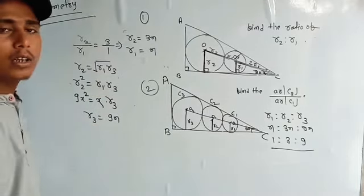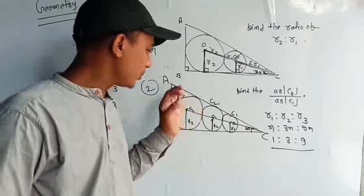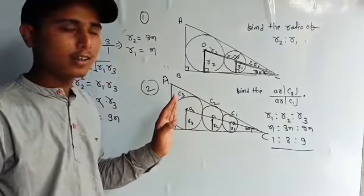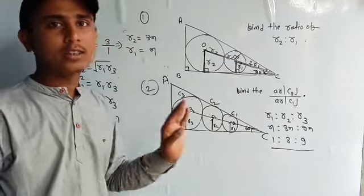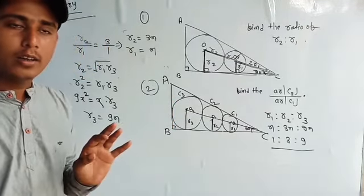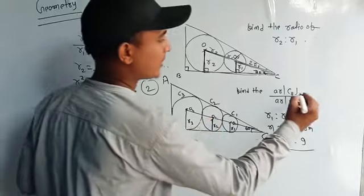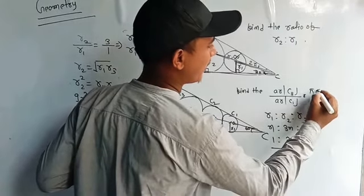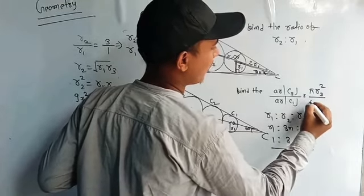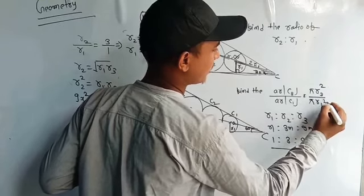But I am not asking this. I am asking this. The big circle is the big circle. What is this area? And the small circle of the area. What is this area?